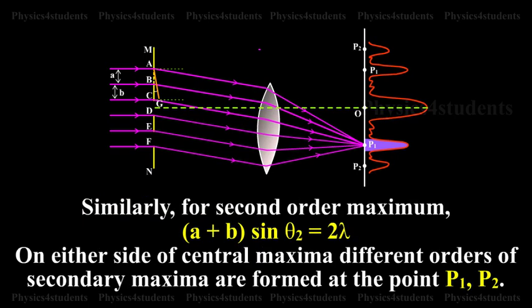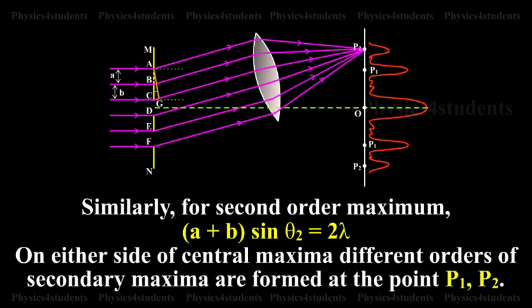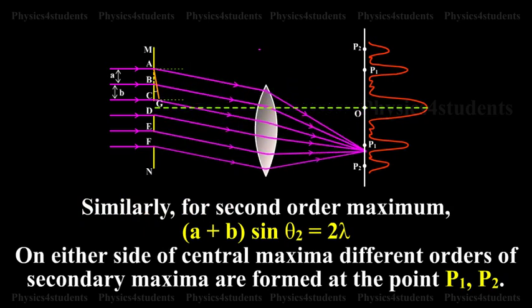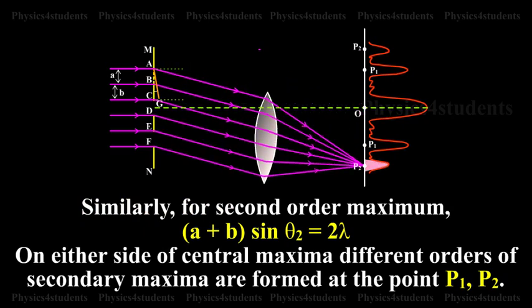Similarly, for second order maximum, A plus B into sin theta 2 equals 2 lambda. On either side of central maxima, different orders of secondary maxima are formed at the points P1, P2.